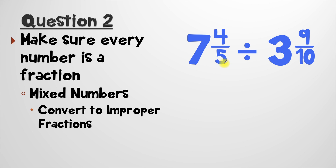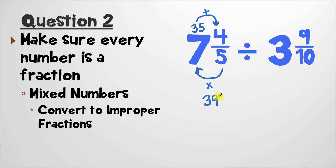First, we'll take our denominator and multiply it by our whole number. So we've got five times seven, which gives us thirty-five. Next, I have to take the result of thirty-five and add it to the numerator. So here it'll be thirty-five plus four, and thirty-five plus four is thirty-nine. That is our numerator. The last thing we have to do is just keep our denominator the same, so I'll write that as thirty-nine over five.